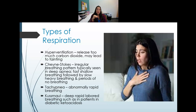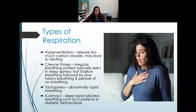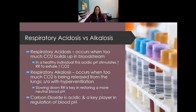Cheyne-Stokes breathing is an irregular pattern typical of sleep apnea: fast, shallow breathing followed by heavy breathing, then a period of apnea. Tachypnea is simply abnormally rapid breathing. Kussmaul breathing is deep, labored breathing seen in diabetic ketoacidosis, where the body attempts to push out excess acid by increasing respiration.